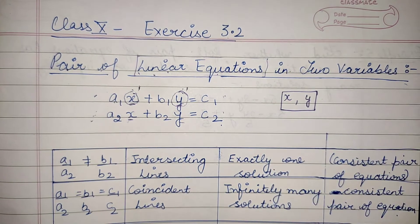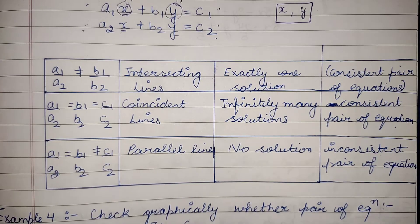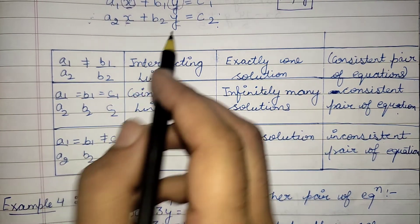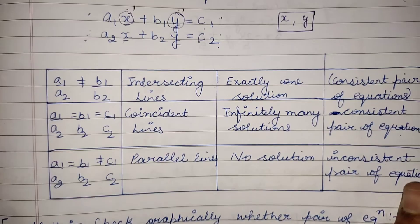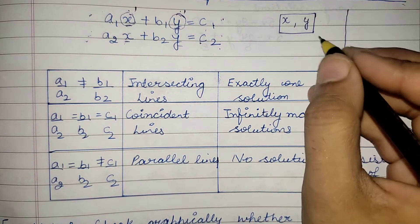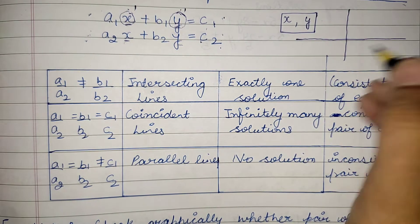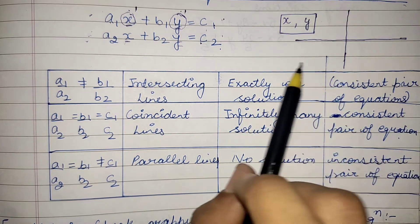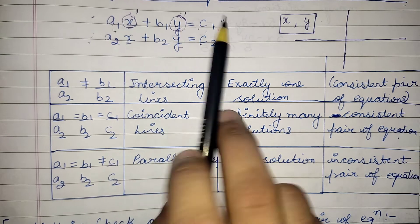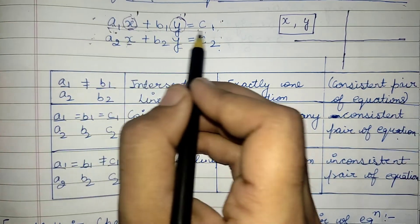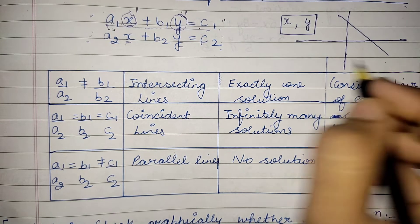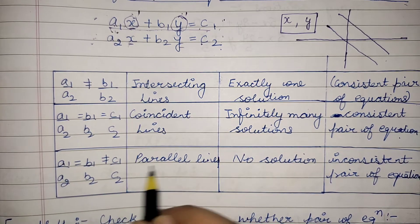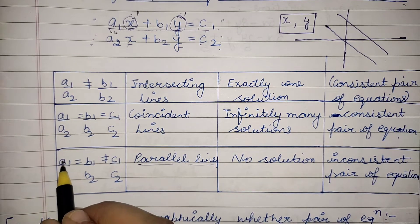There is one rule given before exercise 3.2 which you have to remember. We have to solve these two equations on the graph — we will plot them. You have learned how to plot lines on the graph in class 9th, class 8th, and exercise 3.1. Now, there are possible cases for how two lines can behave: they can be parallel to each other.